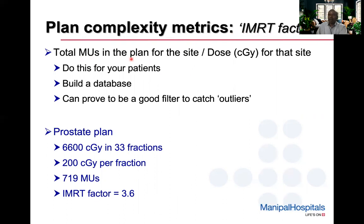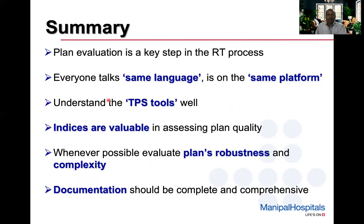In our clinic, we use a simple complexity metric called the IMRT factor: the total MUs in the plan for the site divided by dose per fraction in centigrade. You compute this for all patients and build a database, which serves as a good filter to catch outliers. For example, a prostate plan delivering 66 Gy in 33 fractions — 200 cGy per fraction — yielding 719 MUs gives an IMRT factor of 3.6. Any patient showing a completely different figure is easily flagged.